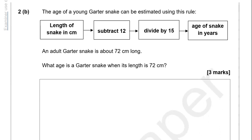The age of a young garter snake can be estimated using this rule: length of snake in centimetres, subtract 12, divide by 15, and it gives us the age of the snake in years. An adult garter snake is about 72 centimetres long.